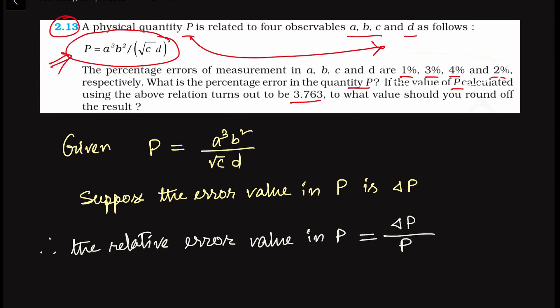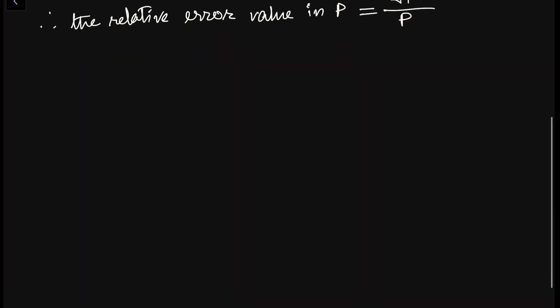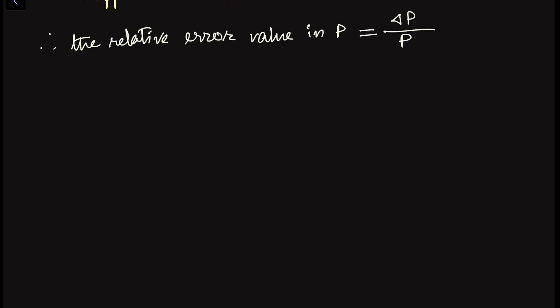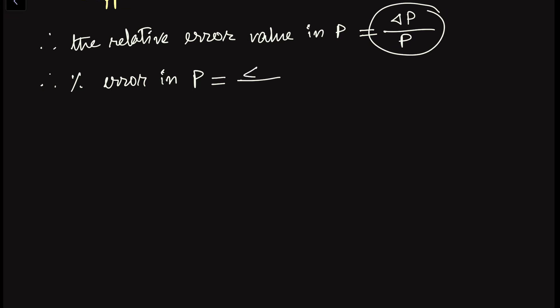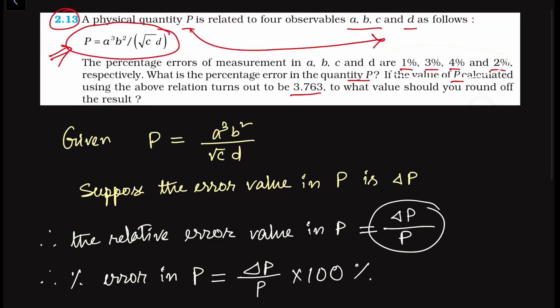In the question, the errors are given in percentage form. So we have to express the relative error in P in percentage form. Therefore, the percentage error in P equals delta P divided by P, multiplied by 100.